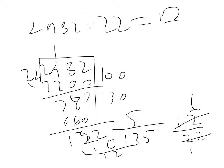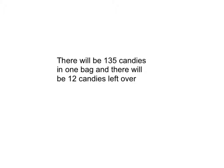I can't divide the candy into fractions and give it to them. I have to just give the whole numbers and make the remainder into just a remainder. So there will be 135 bags, and there will be 12 candies left over.